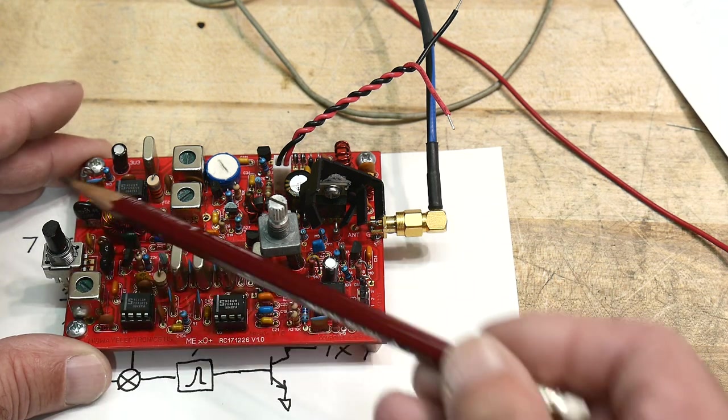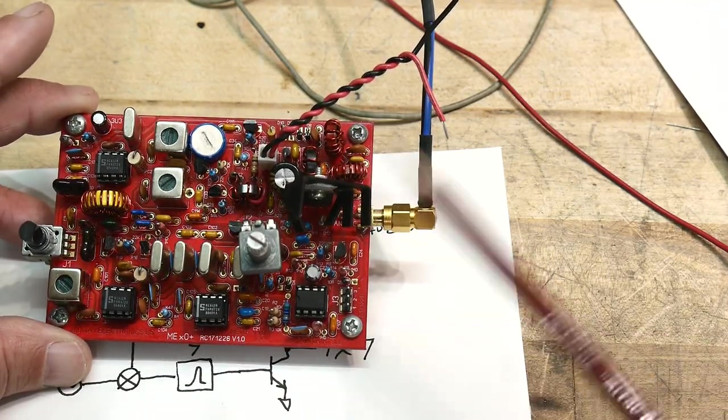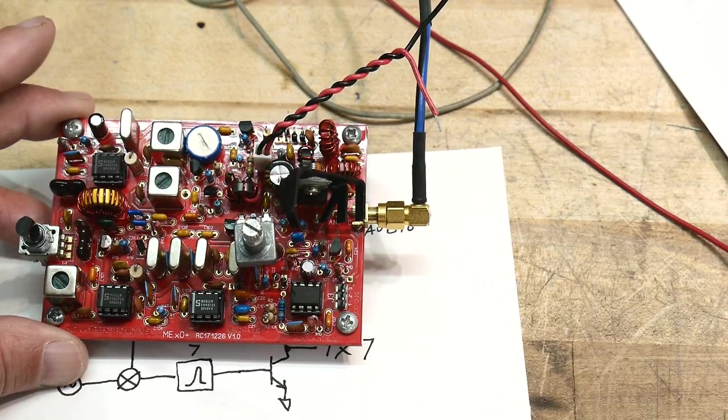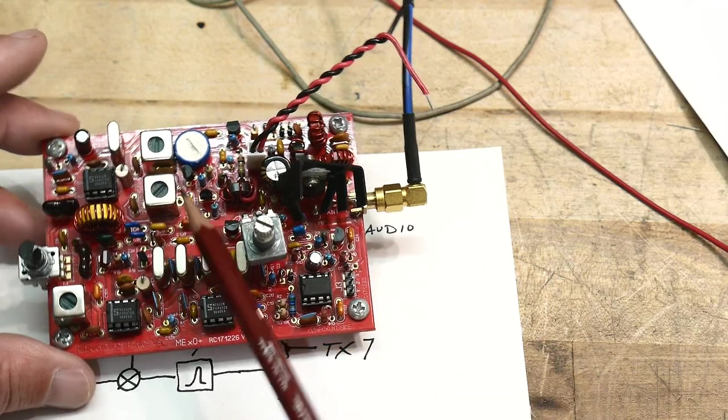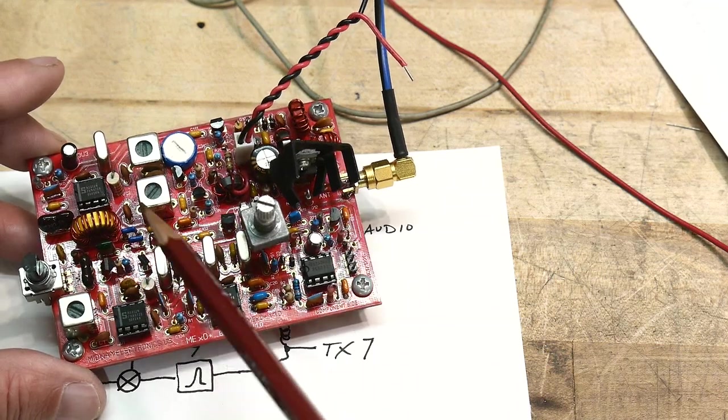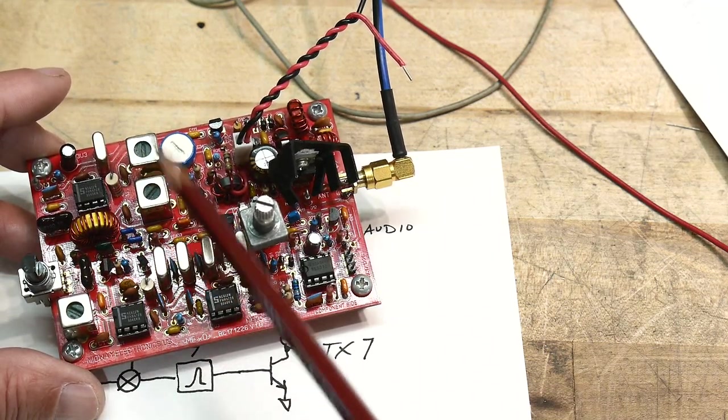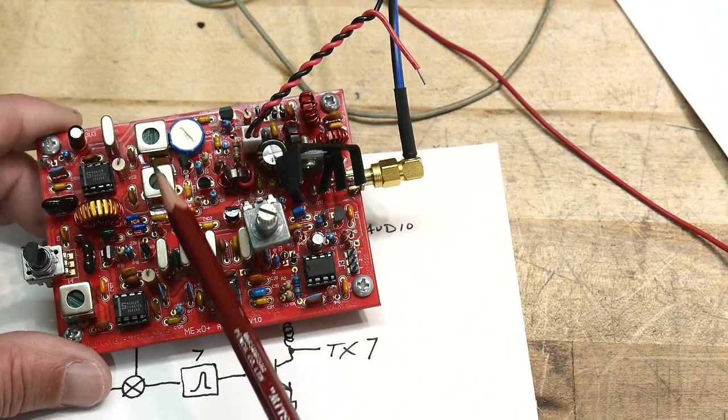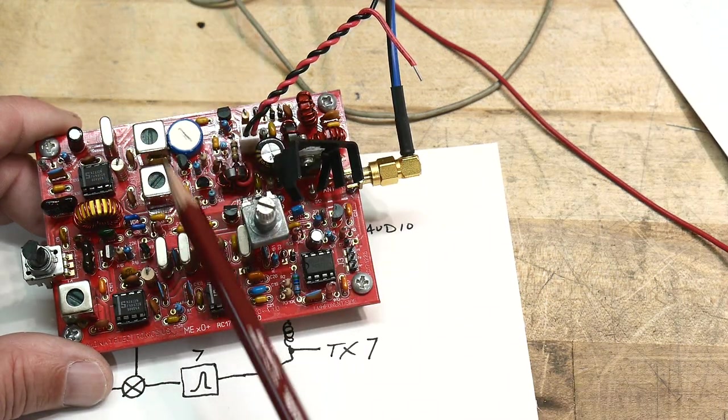Everything else is hand-wound. You get to wind your own toroids and stuff. You need to buy some correct cores. These two cans are used for the 7 megahertz IF. So instead of crystals, it uses these tunable transformers. You peak these two for the 7 megahertz.